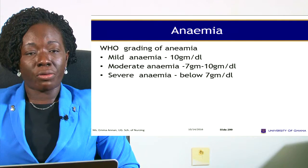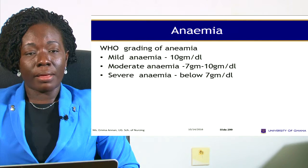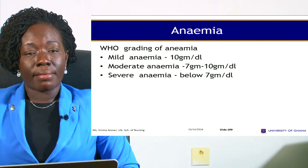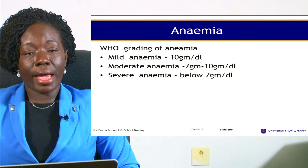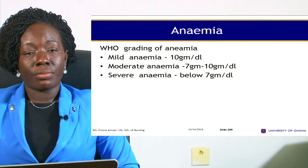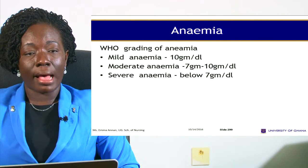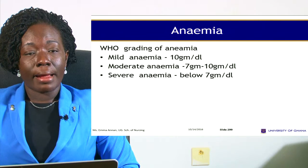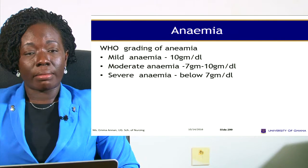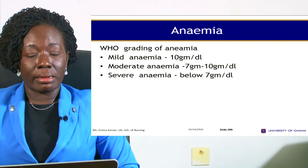WHO grading of anemia: for mild anemia, that is when the child has 10 grams per deciliter. Moderate is 7 to 10 grams per deciliter, and severe is below 7 grams per deciliter.